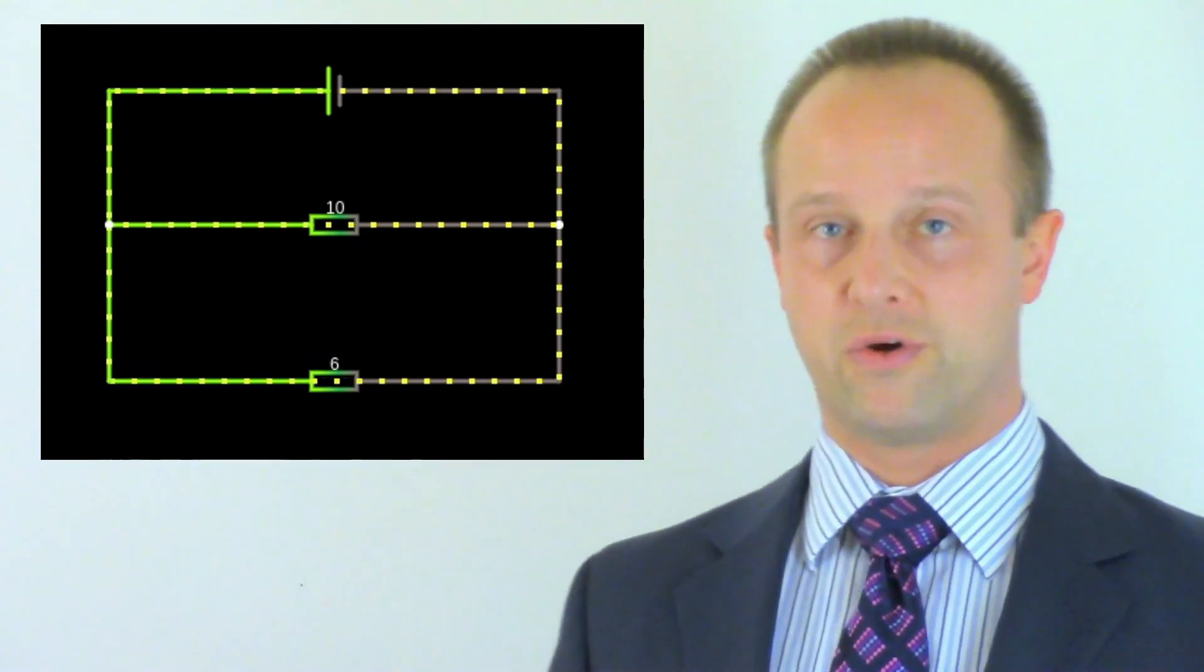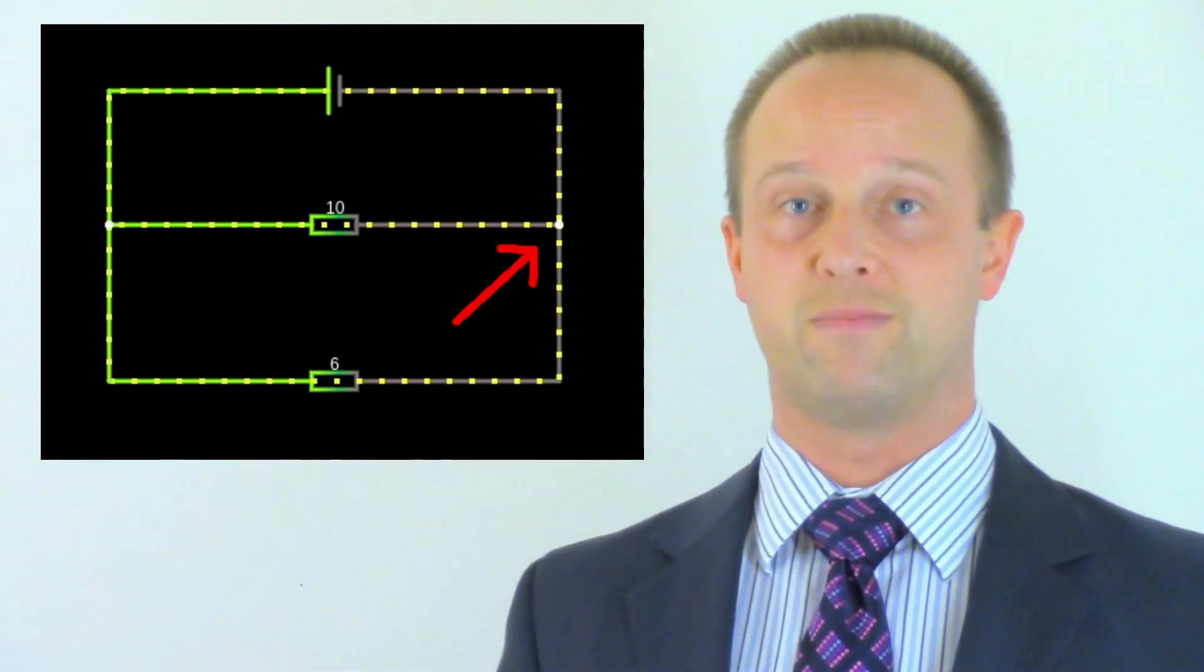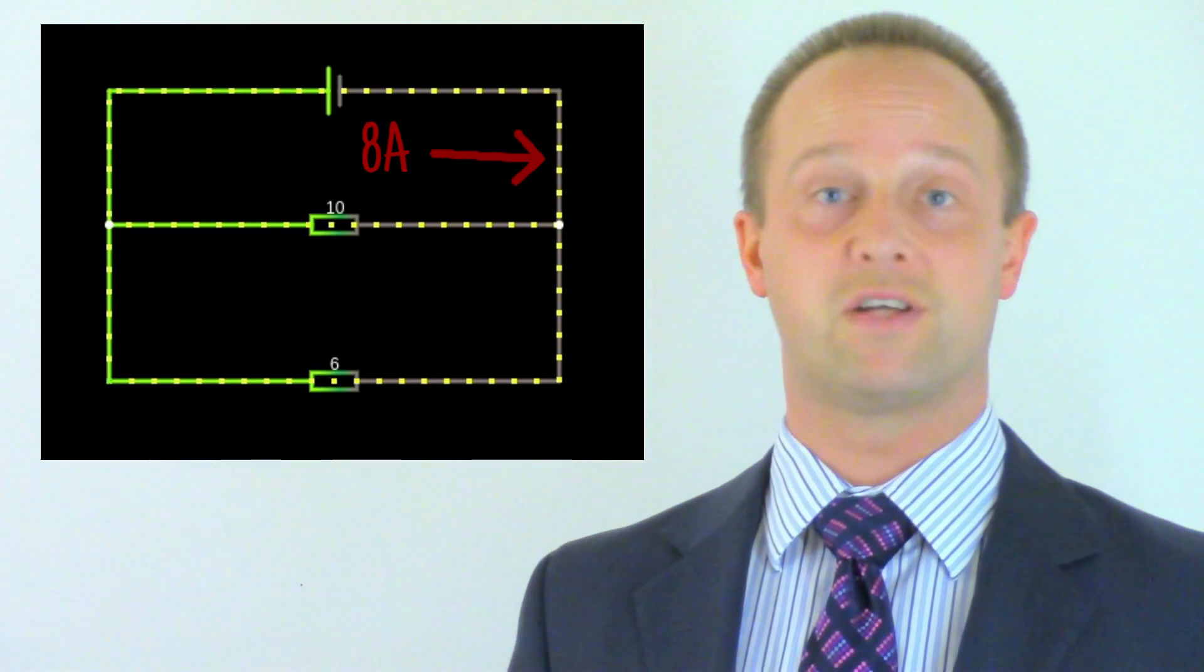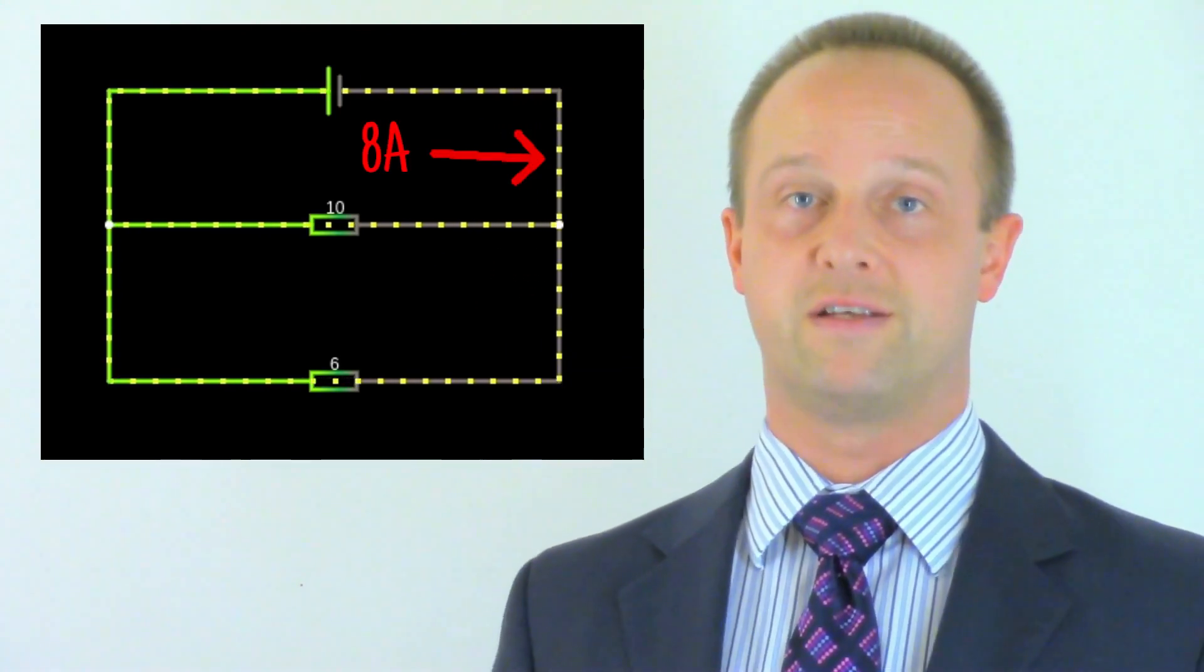So when the two routes join back together again, like this, the two currents join back together as well, giving us our original 8 amps. Because, as I said before, the current isn't used up.